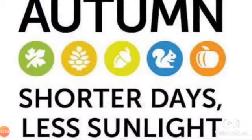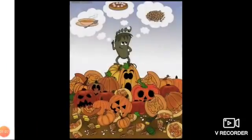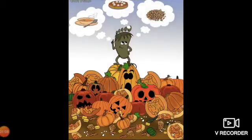In autumn, there is less sunlight because the days are shorter. Pumpkins are a big crop during autumn. They are used for pies and soups. That's all for today. Thank you and goodbye.